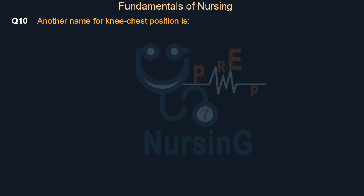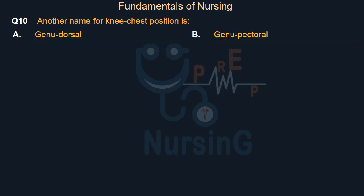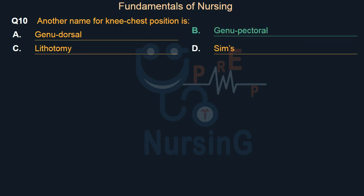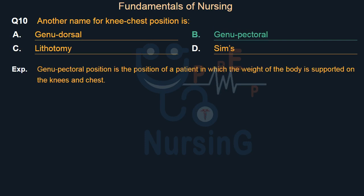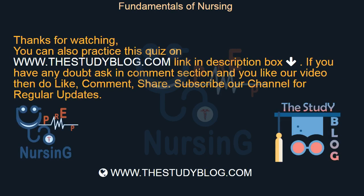Another name for knee-chest position is: Option A — Genu-dorsal. Option B — Genu-pectoral. Option C — Lithotomy. Option D — Sims. Right answer is Option B: Genu-pectoral. Genu-pectoral position is the position of a patient in which the weight of the body is supported on the knees and chest.